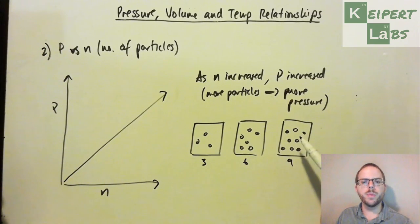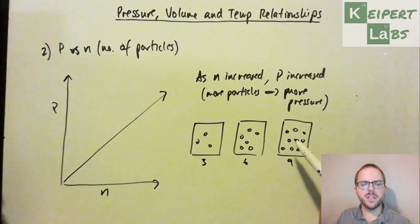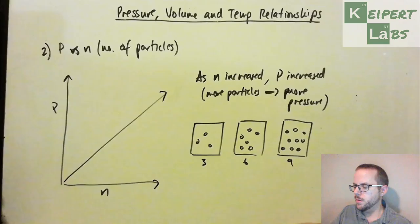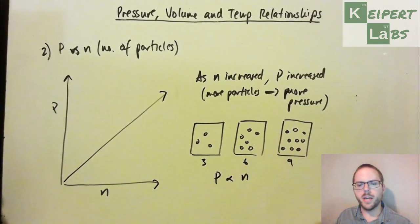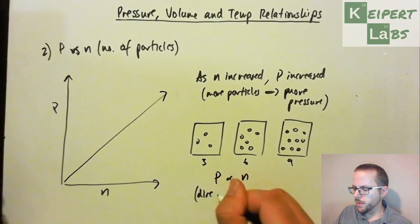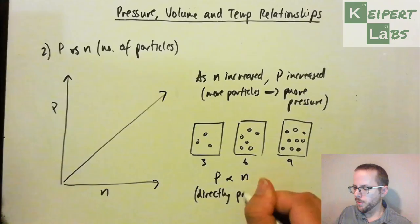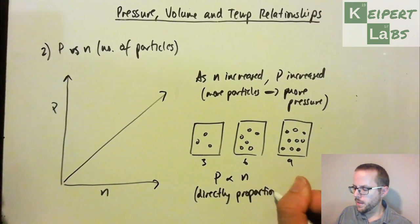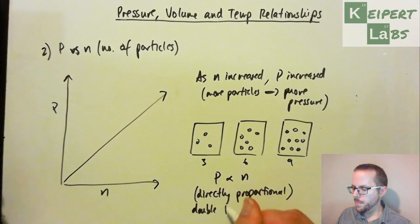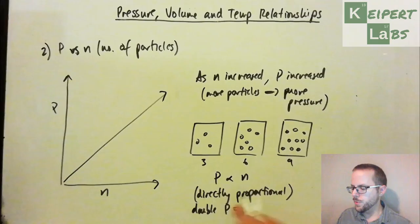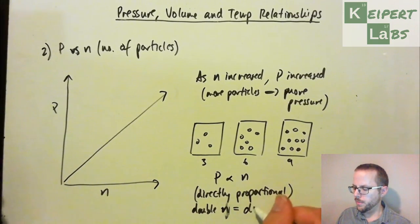If we had a given room, you had three people in it, and then all of a sudden you doubled it to six people, and you tripled it to nine people, you get more chances that they're going to bump into the walls. So we would say that pressure is directly proportional to the number of particles. So that means that if you double the number of particles, you would double the pressure.